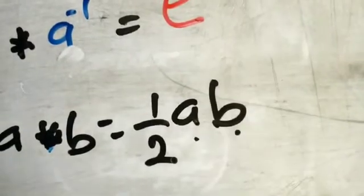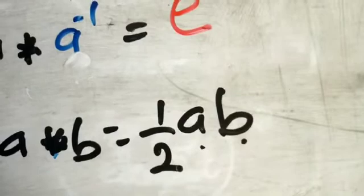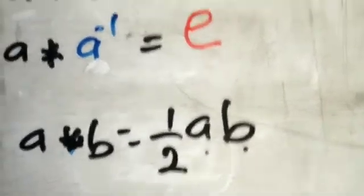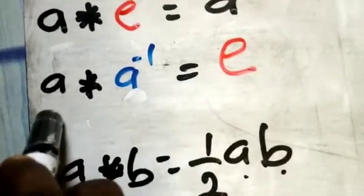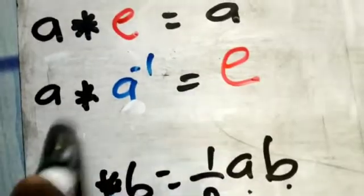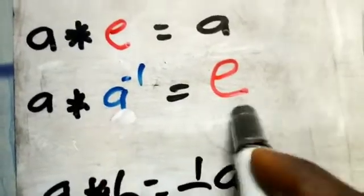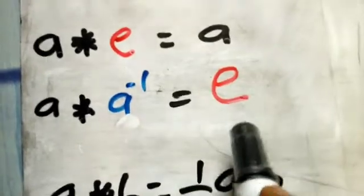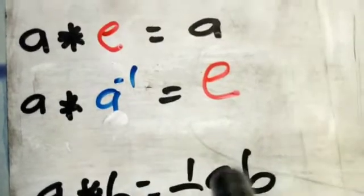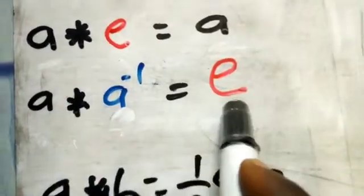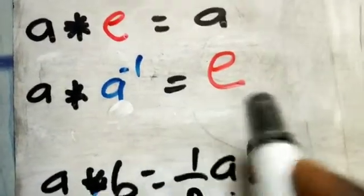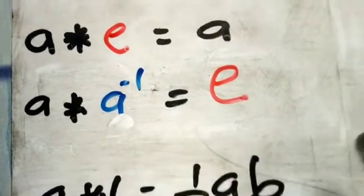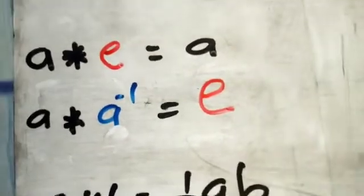To find the inverse of 2, we first need to know the identity element. If you don't know the identity element, you cannot equate anything when solving for the inverse. So let's find the identity element first before we proceed.